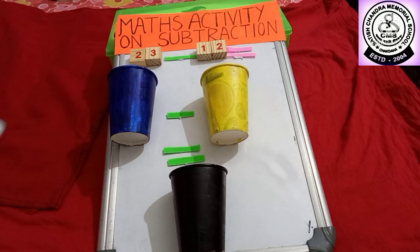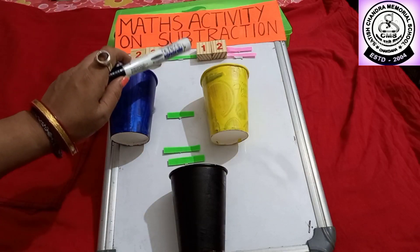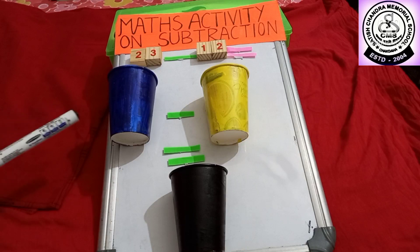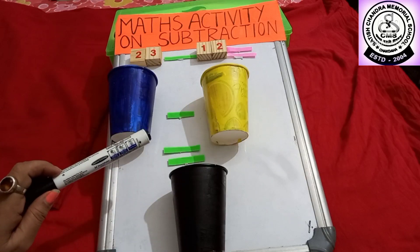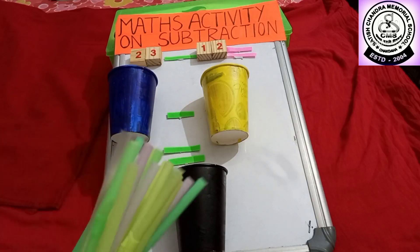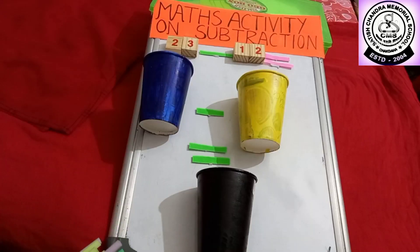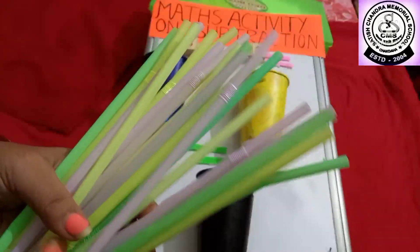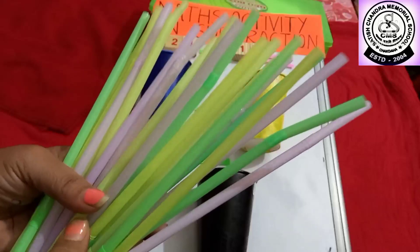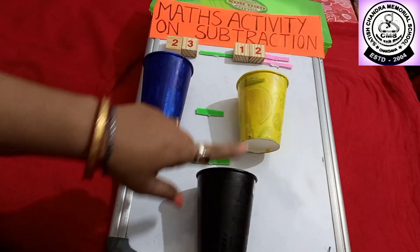Here I have given 23 minus 12. That means you have to subtract 12 from 23. And here I have given 3 paper cups. So let's do this activity. For this activity I have taken some colourful straws. And I have taken colourful glasses.